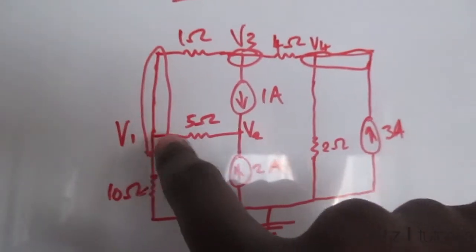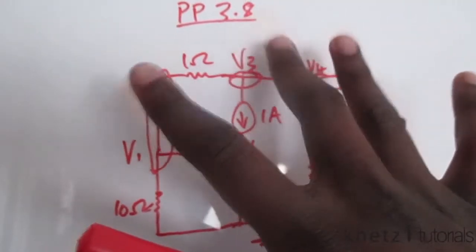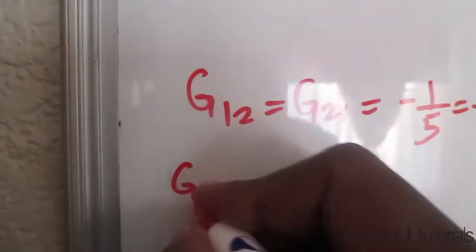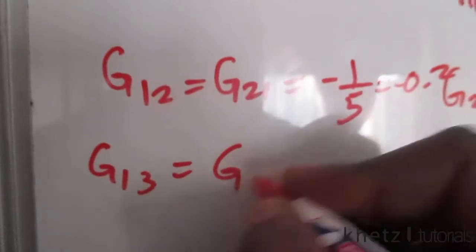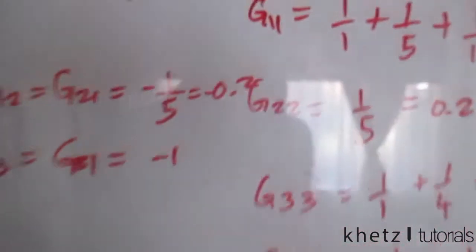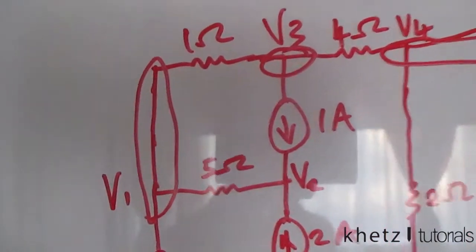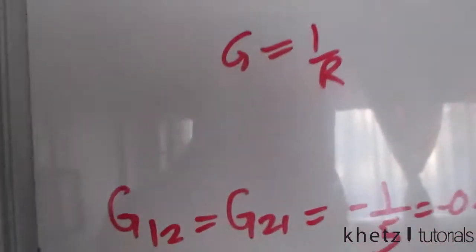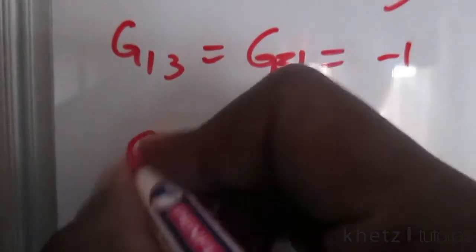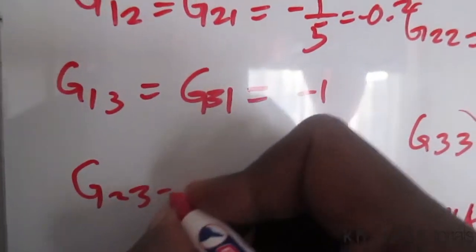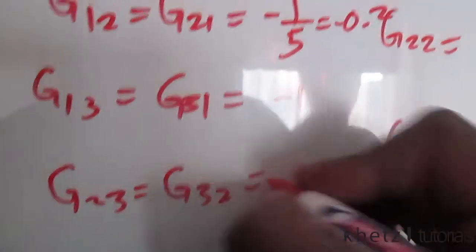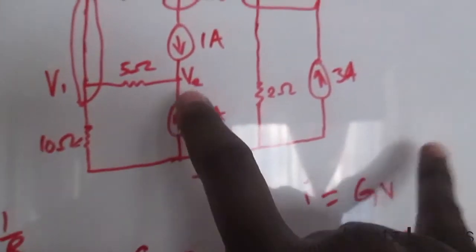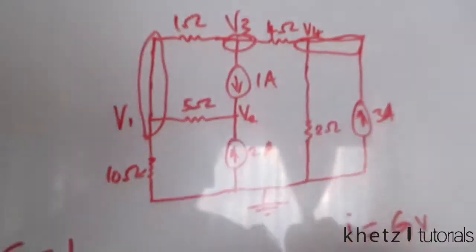Between nodes 1 and 3 we have a 1-ohm resistor, so G_13 = G_31 = −1/1 = −1. Between nodes 2 and 3 there are no conductances, so G_23 = 0.